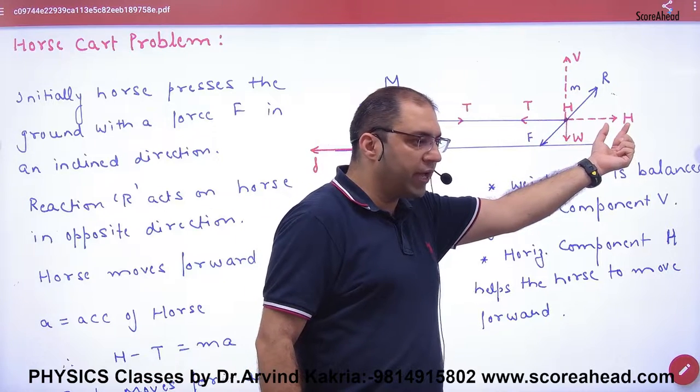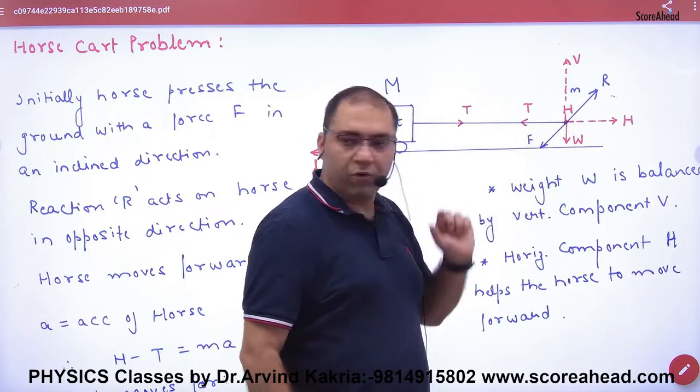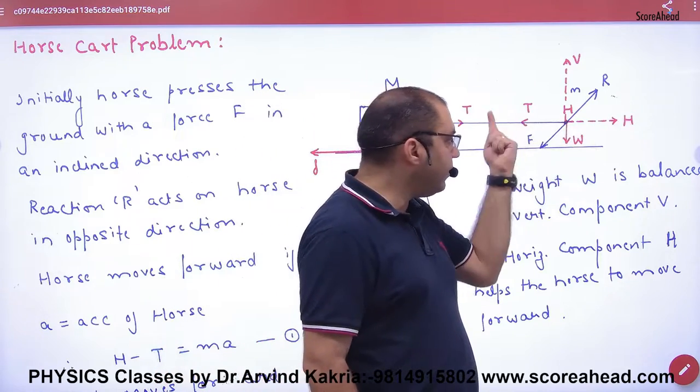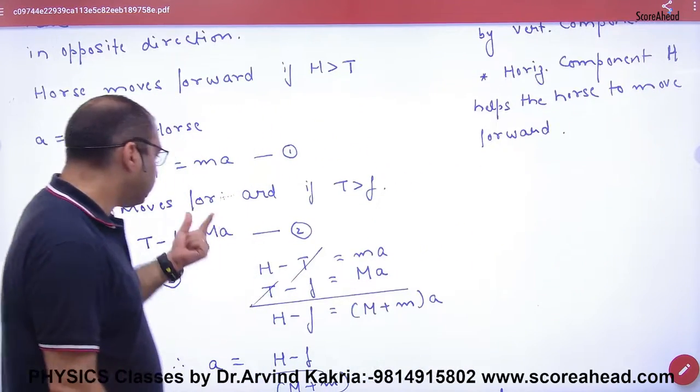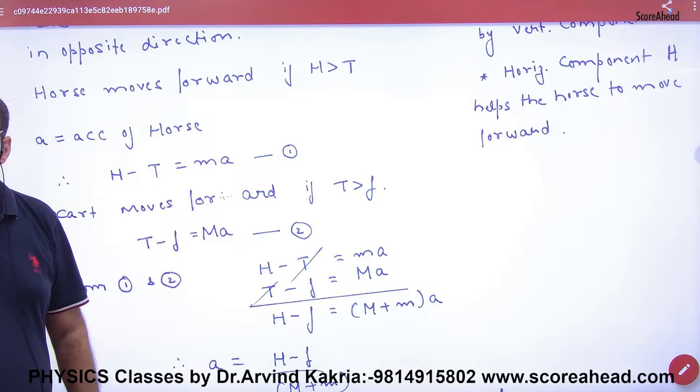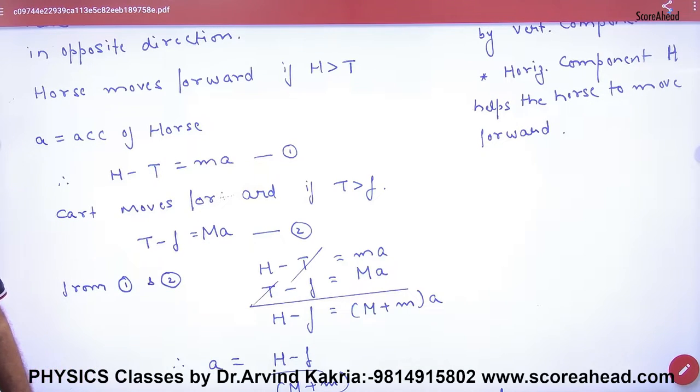Forward force is H, backward force is T. Net force is H minus T. So H minus T equals mass times acceleration: H - T = ma. This is the first equation.